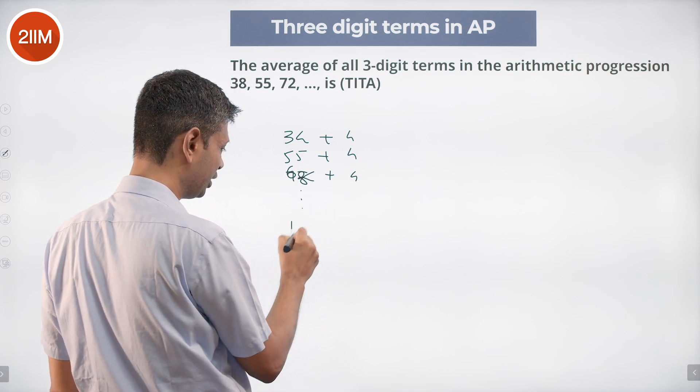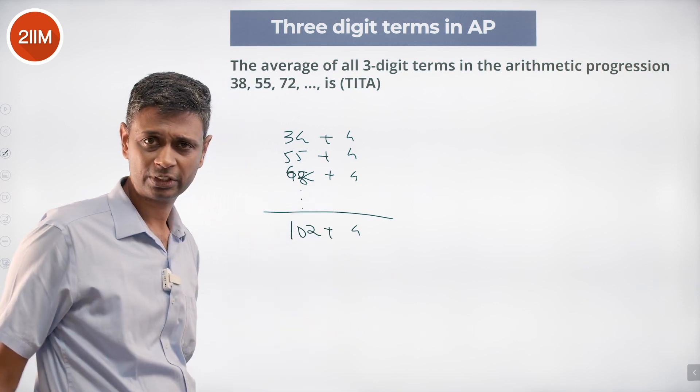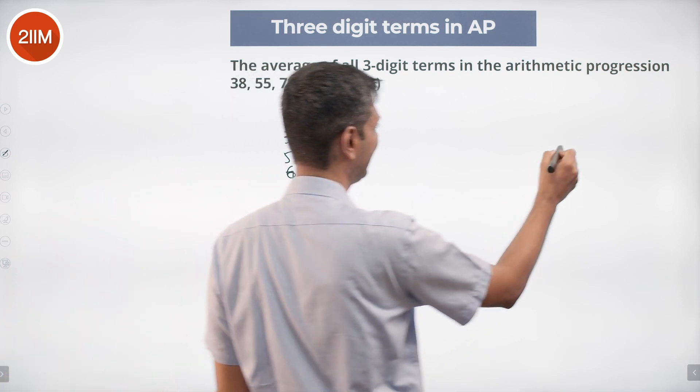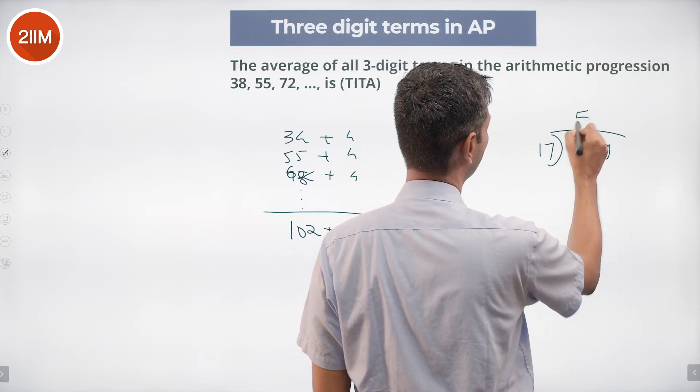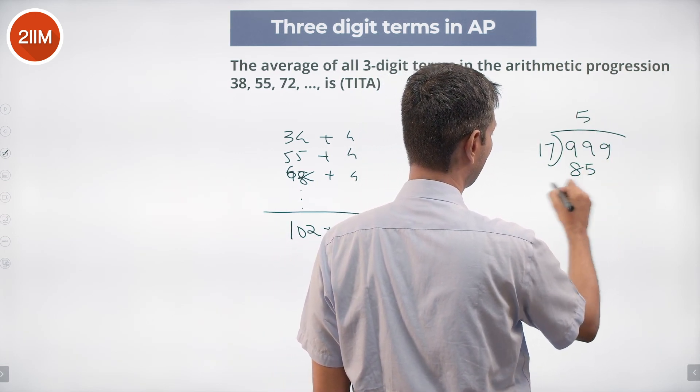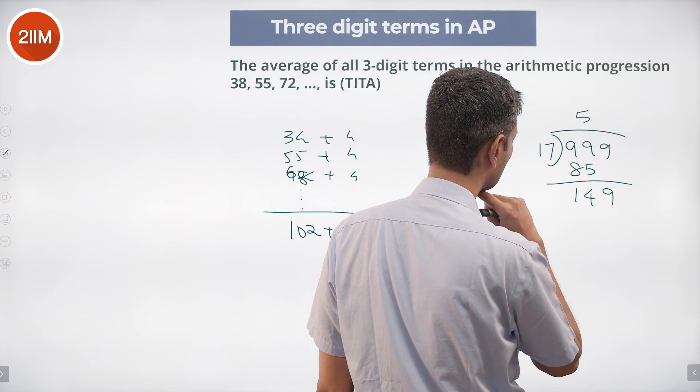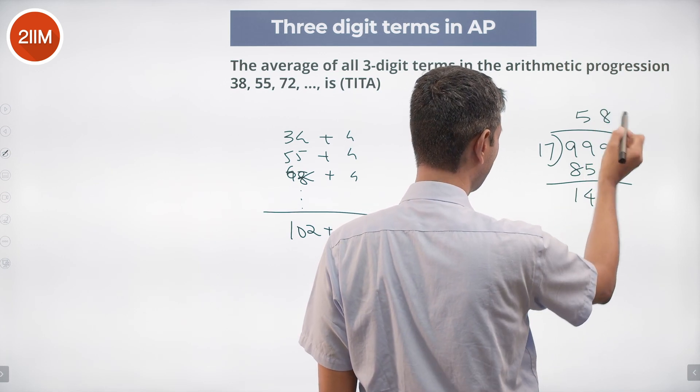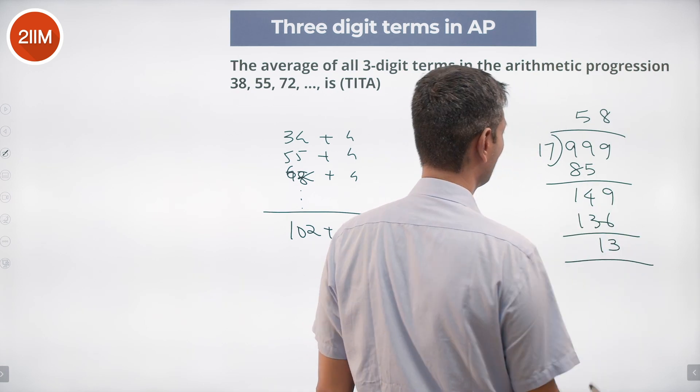102 plus 4 will be our first term. So how do we find our last term? We take 999 divided by 17, see what is remaining. Goes 5 times, 85, 149. Can it go 9 times? No, it cannot go. 8 times, 136. Remaining is 13.